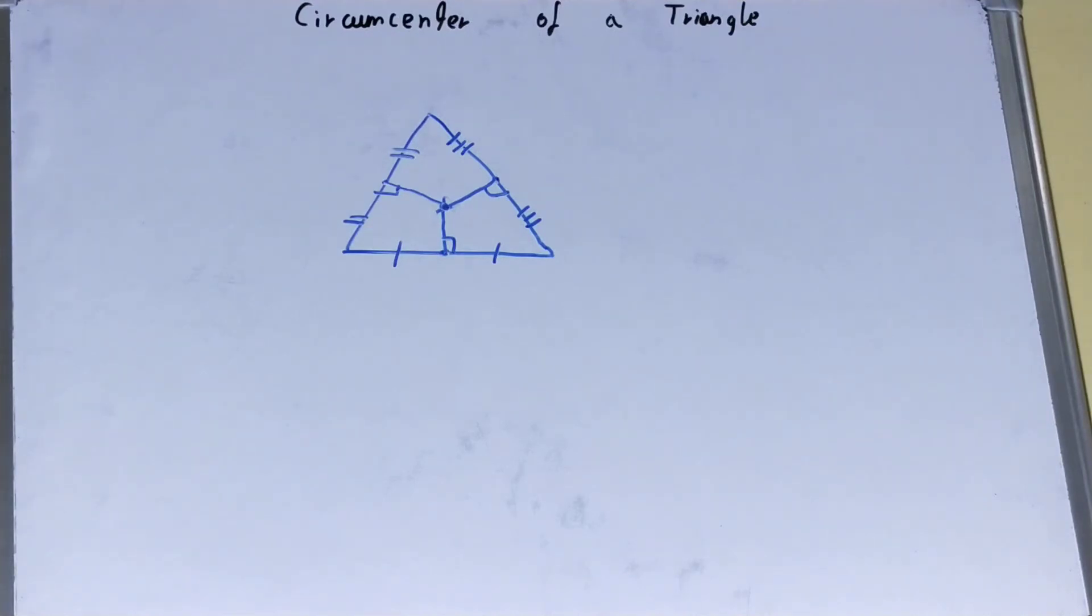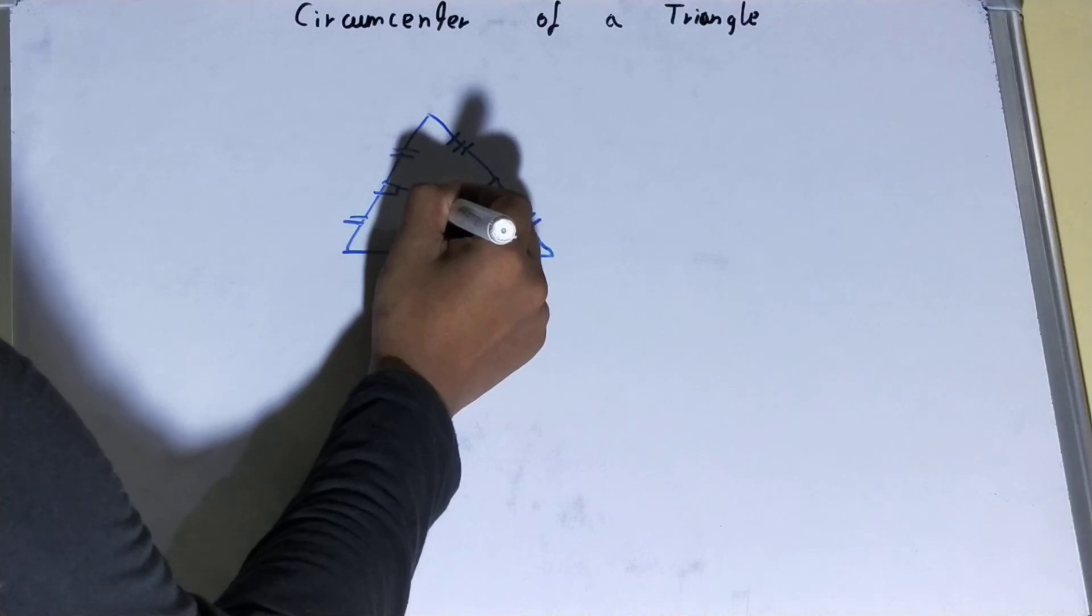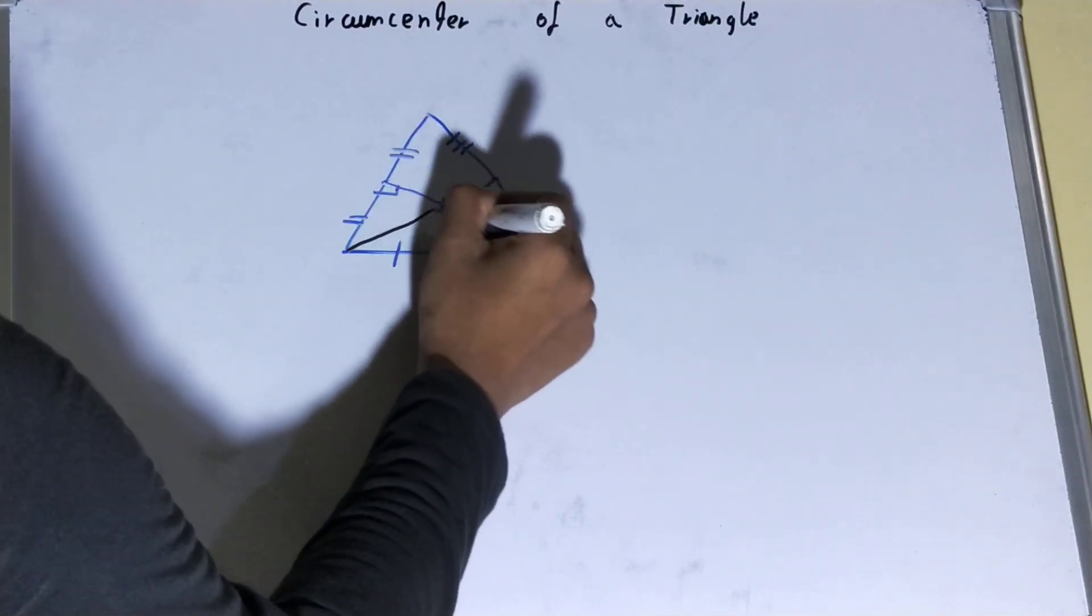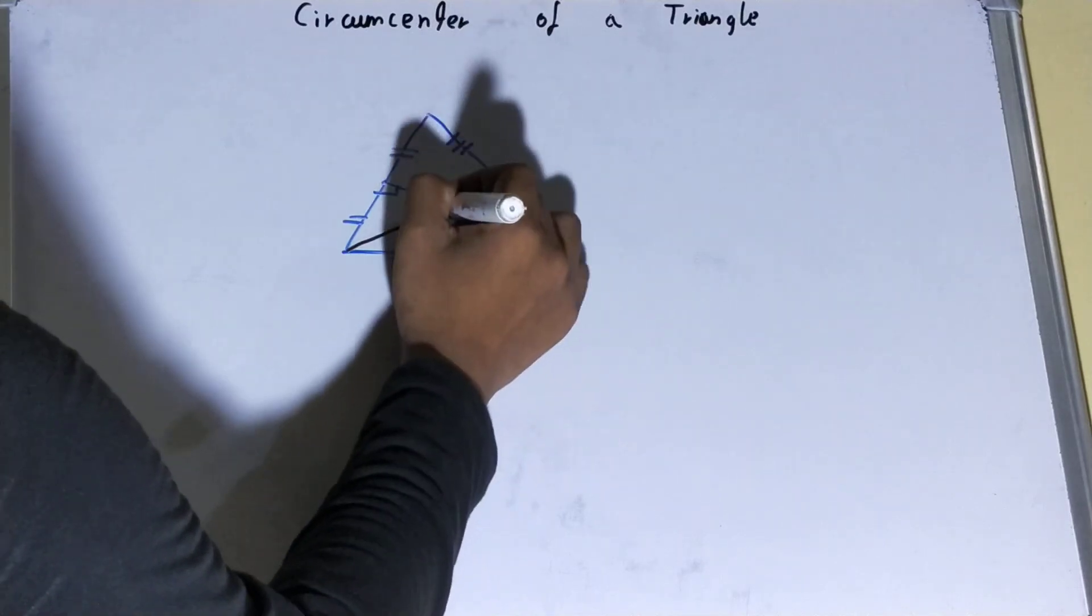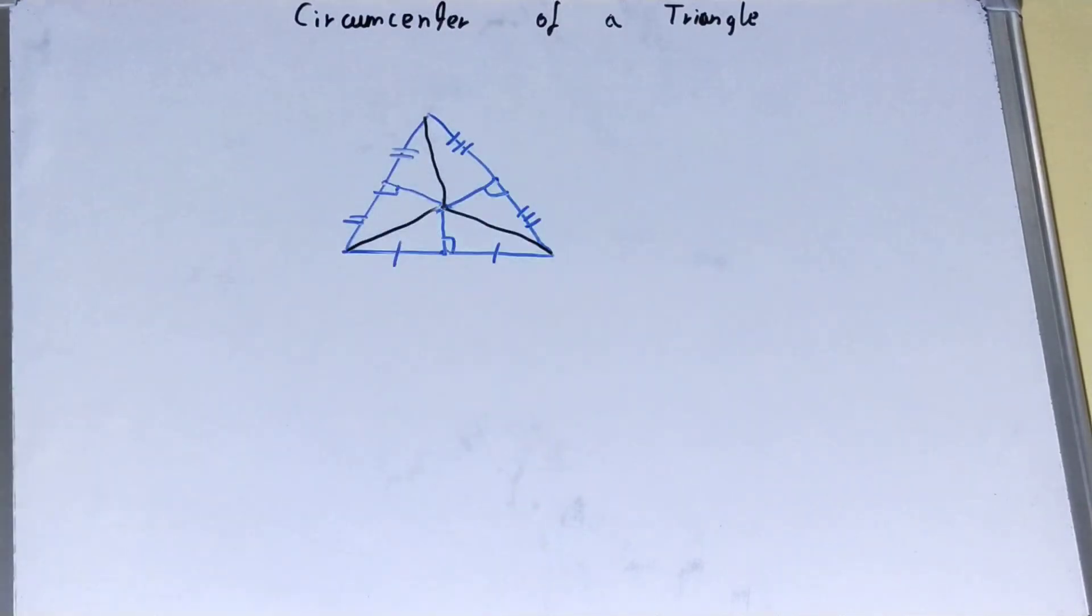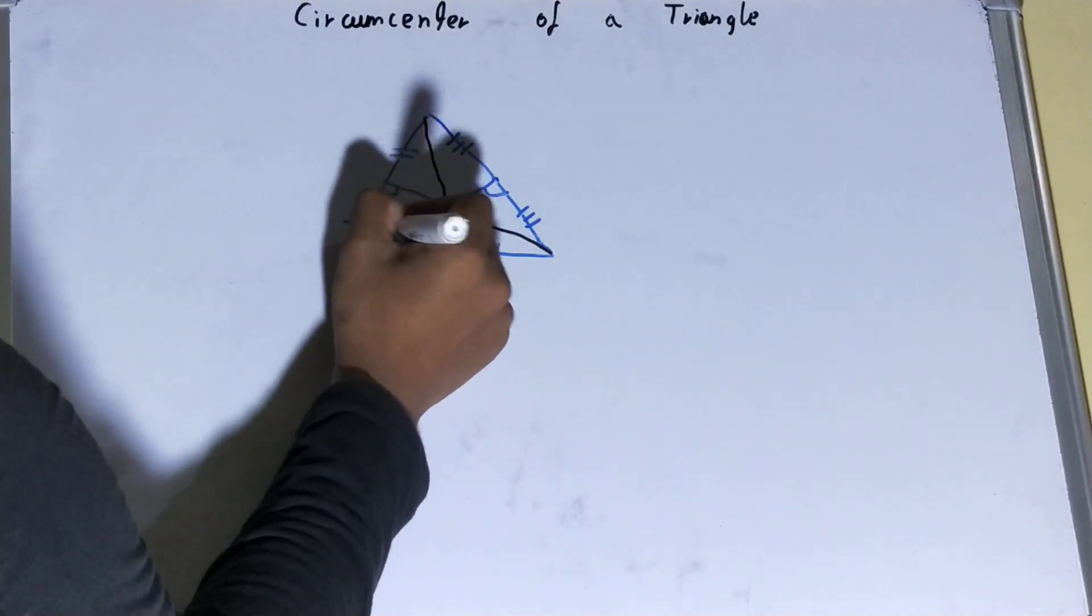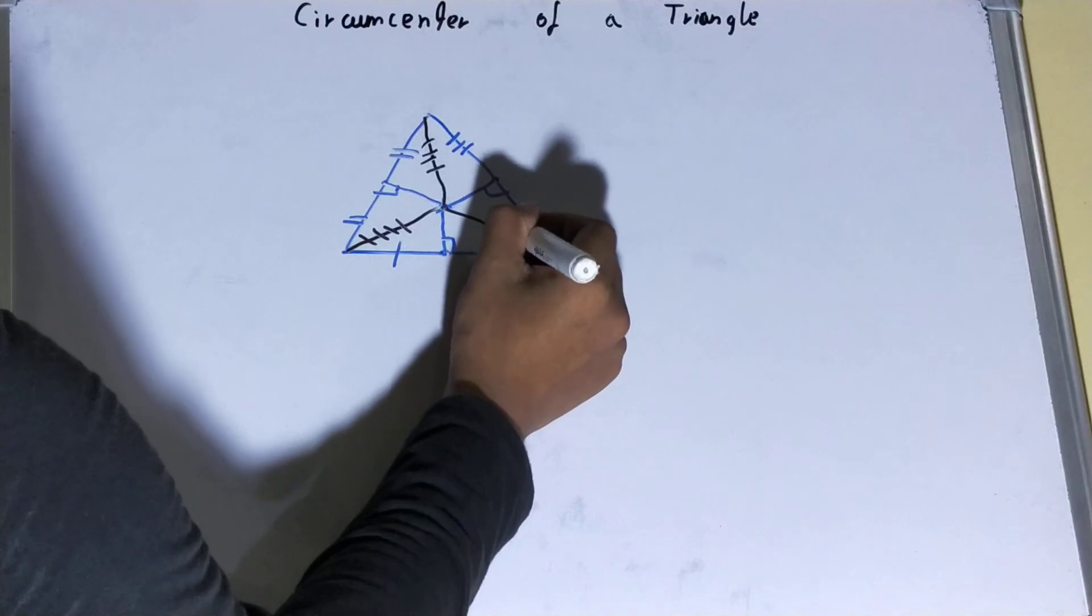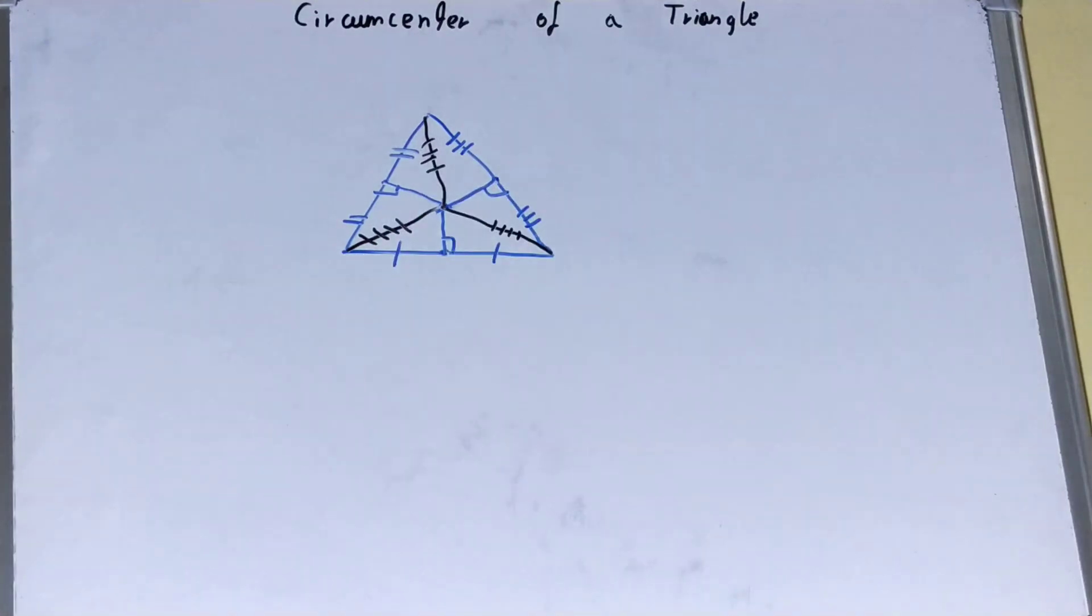What is that property? If you will connect them with the triangle vertices, like this, this, and this, then these all will be equal to each other. So this is the property of the circumcenter.